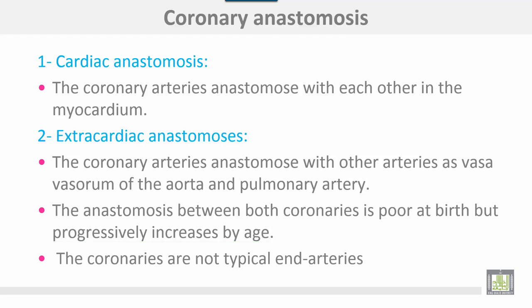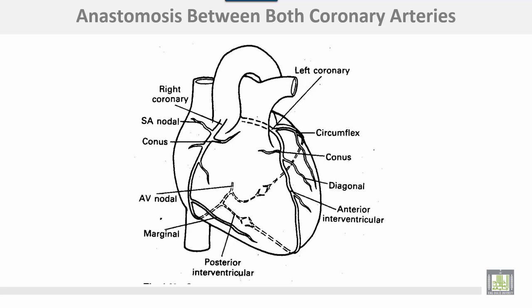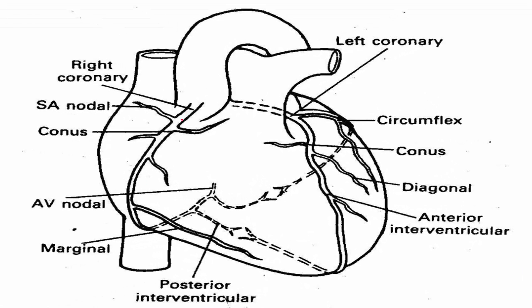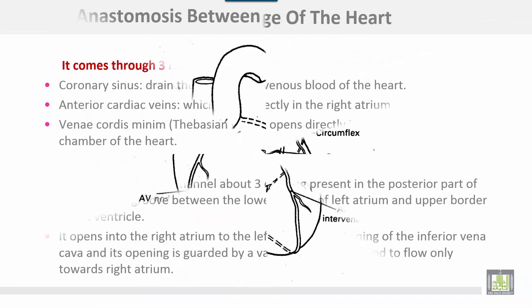The coronaries are not typical end arteries. The different branches are shown here: the right coronary, the marginal branch, the left coronary giving the circumflex directed backward, the anterior interventricular, and the area of anastomosis between the right and left coronary arteries.